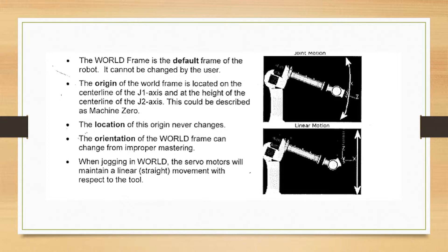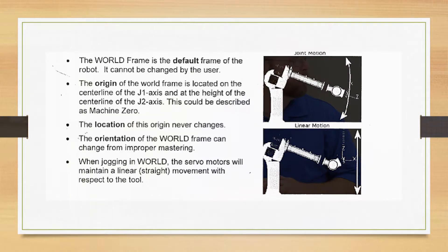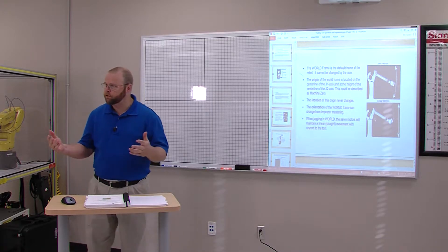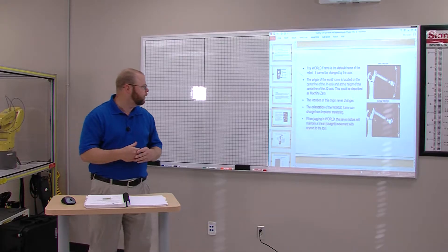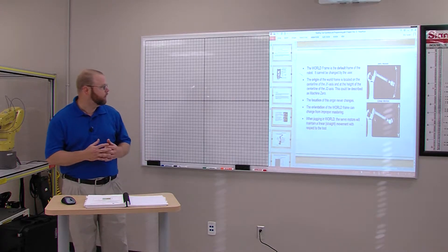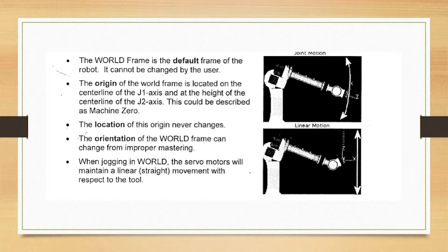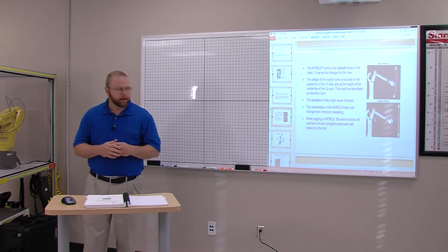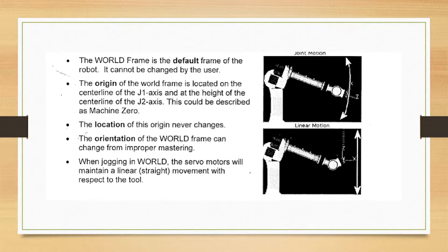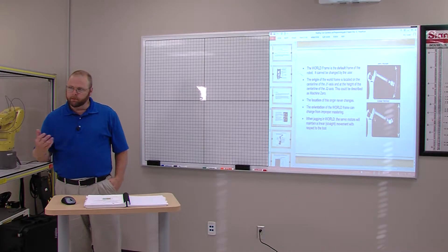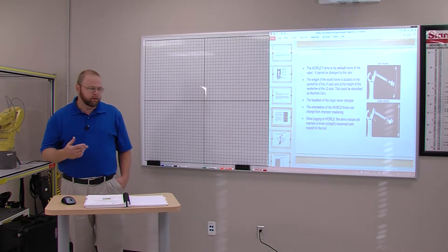The world frame is the default frame of the robot and cannot be changed by the user. The location of the world origin frame is the center line of the J1, J2 axis, which we've already covered in the previous lesson. This can be described as machine zero — this is the robot's home position or starting point. The location of this origin never changes; it will always be in the same spot, set from the manufacturer.